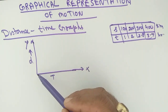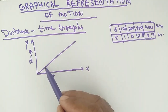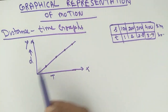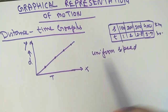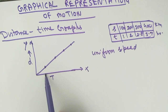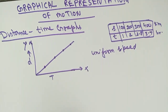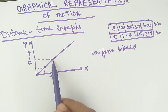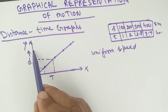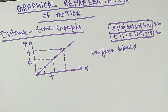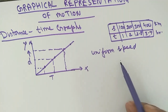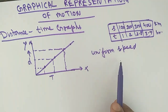Now I'm taking different types of the distance-time graph. Suppose this is a type of graph — a straight line. This represents uniform speed, because the body covers equal distance in equal intervals of time. Equal distances are marked here; the intervals are always equal. So a straight-line distance-time graph represents uniform speed.